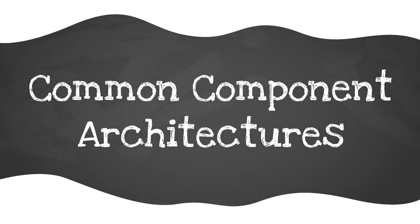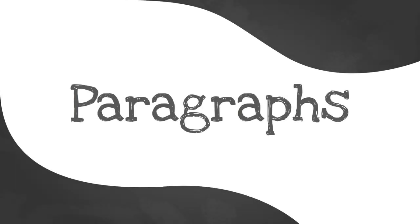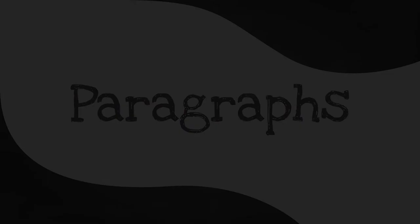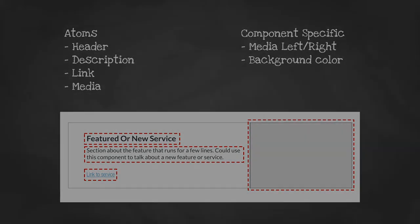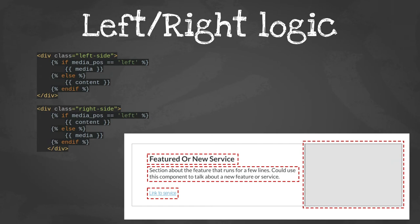Moving into component architectures: the two big ones are Paragraphs and Layout Builder, since they are the two big options in the underlying architectures for pretty much every other system you'll see. Getting into Paragraphs, we revisit the side-by-side component — four atoms: header, description, link, and media, plus media left/right and background color fields.